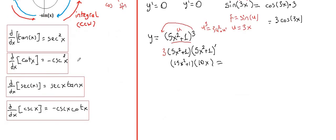Let's see four more trig functions that will be very useful. Derivative of tangent x is secant squared of x. Derivative of cotangent x is negative cosecant squared of x. Derivative of secant x is secant x times tangent x. Derivative of cosecant x is negative cosecant x times cotangent x. You need to know all of them by heart, otherwise you'll have to derive them, which wastes time on a test.